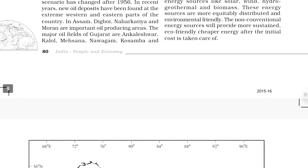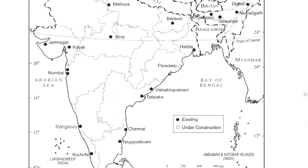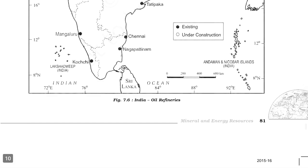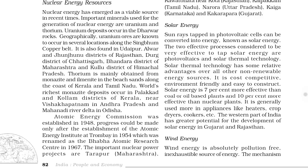The six nuclear power stations are: Tarapur (oldest, 1969), Rawatbhata in Rajasthan, Kalpakkam in Tamil Nadu, Narora in Uttar Pradesh, Kaiga in Karnataka, and Kakrapar in Gujarat. For solar energy, there are two effective processes to tap it: photovoltaic and solar thermal technology. Solar technology is cost competitive, eco-friendly, and easy to construct. In the western part of India there is greater potential to develop solar energy. Mathanipur near Bhuj is the largest solar energy facility.